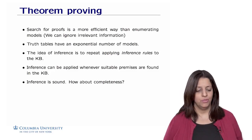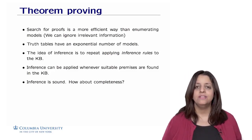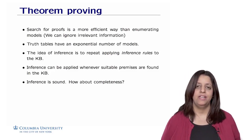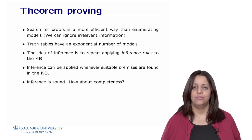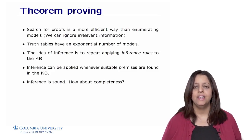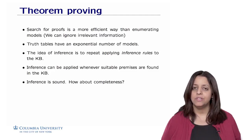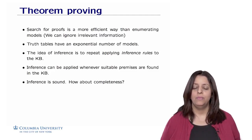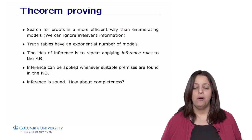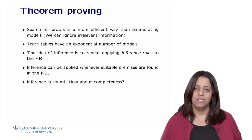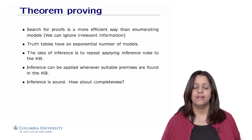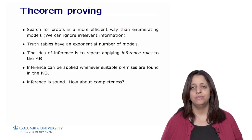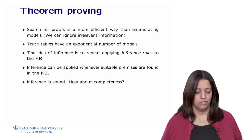For example, in R3, R3 was not needed to derive any of the goals I wanted to check — for which I wanted to check entailments. So R3 was ignored altogether, and we don't need to use it for inference. However, when you do model checking, you have to consider all possible propositions and all possible rules in your knowledge base.